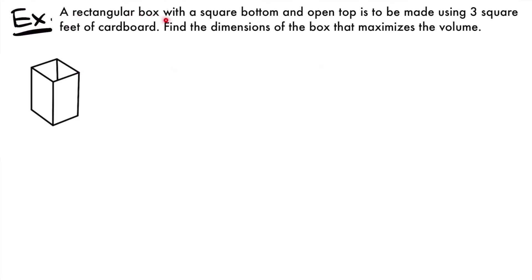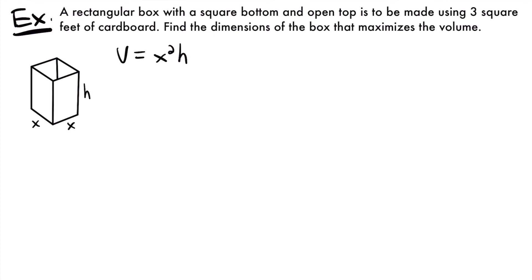For our final example: a rectangular box with a square bottom and open top is to be made using three square feet of cardboard. Find the dimensions that maximize the volume. Labeling the diagram, the square bottom edges are both x and the height is h. Volume equals x times x times h, so V equals x squared times h. This is our primary equation, but it involves two variables, so we need a constraint.